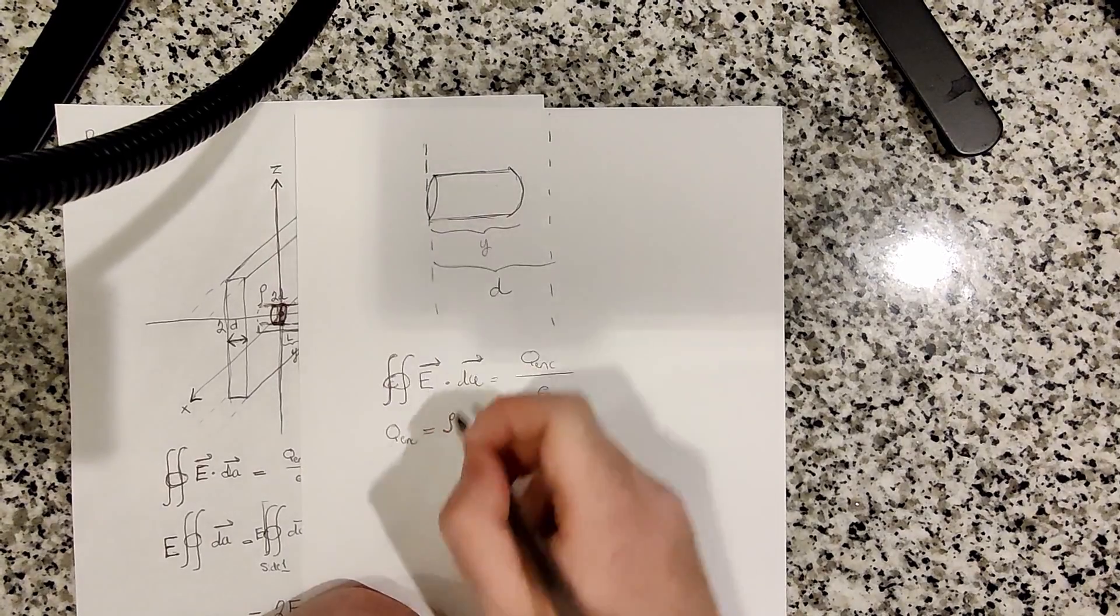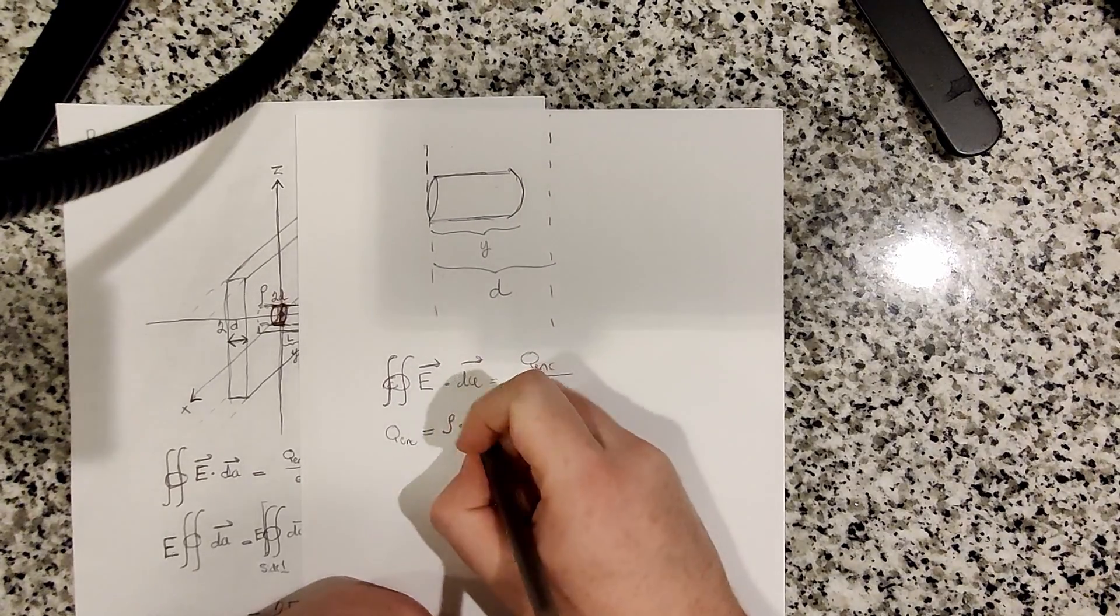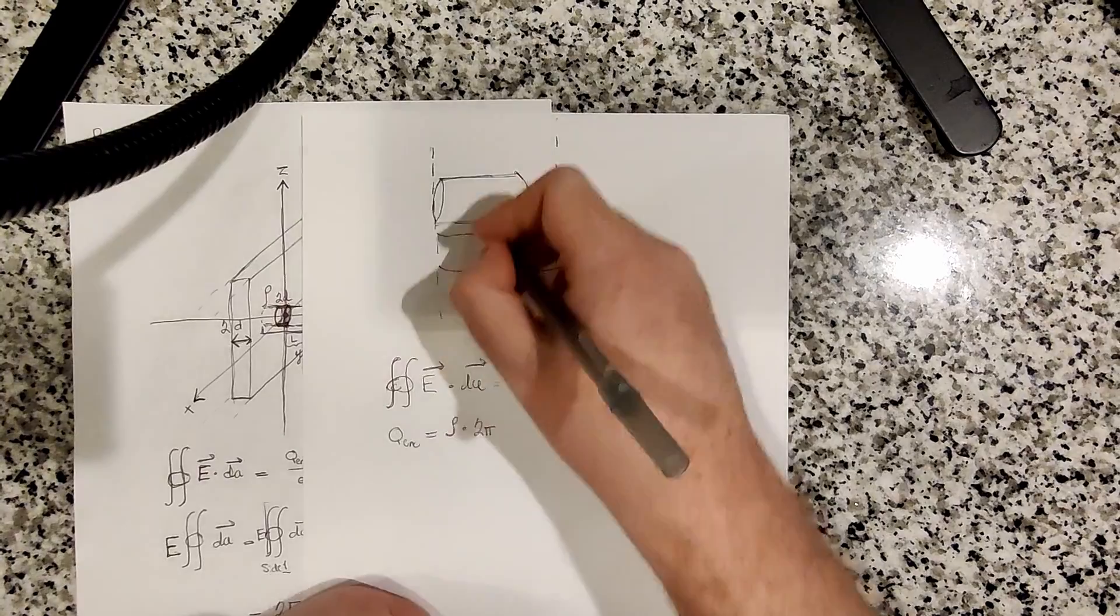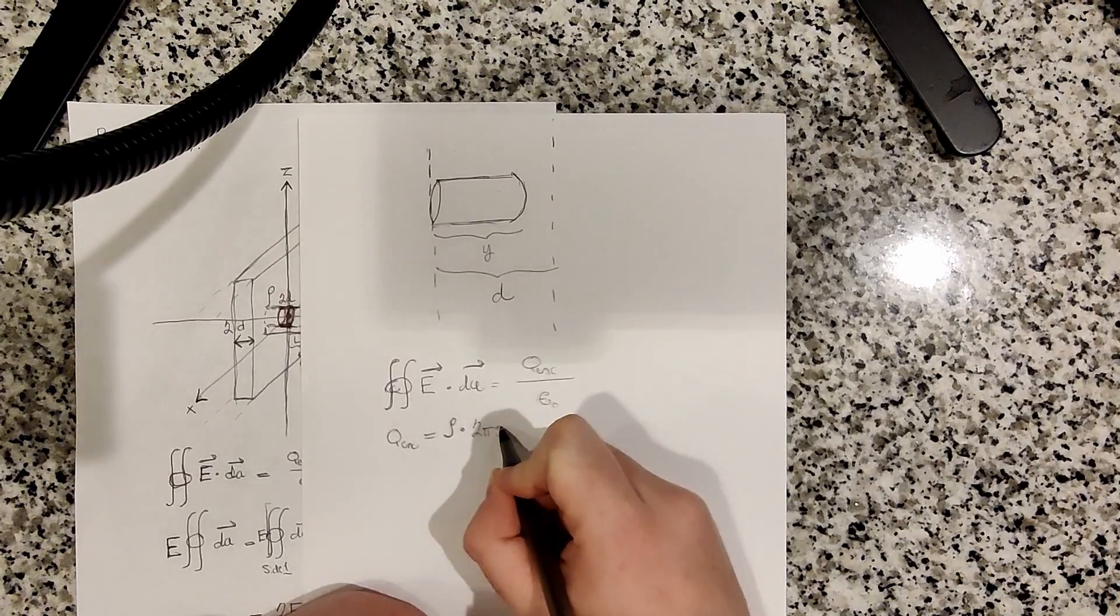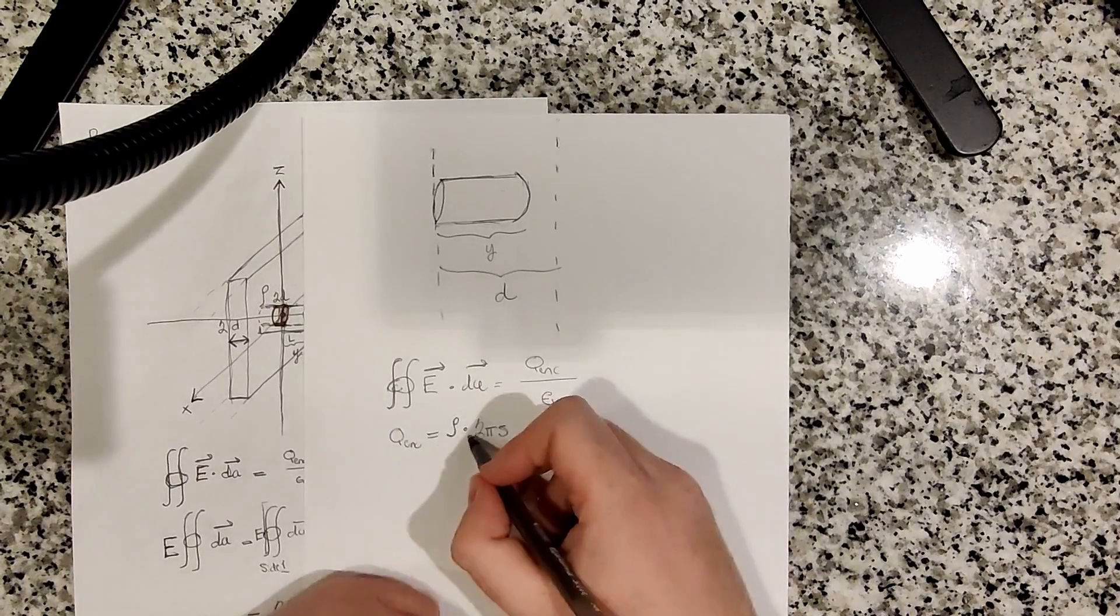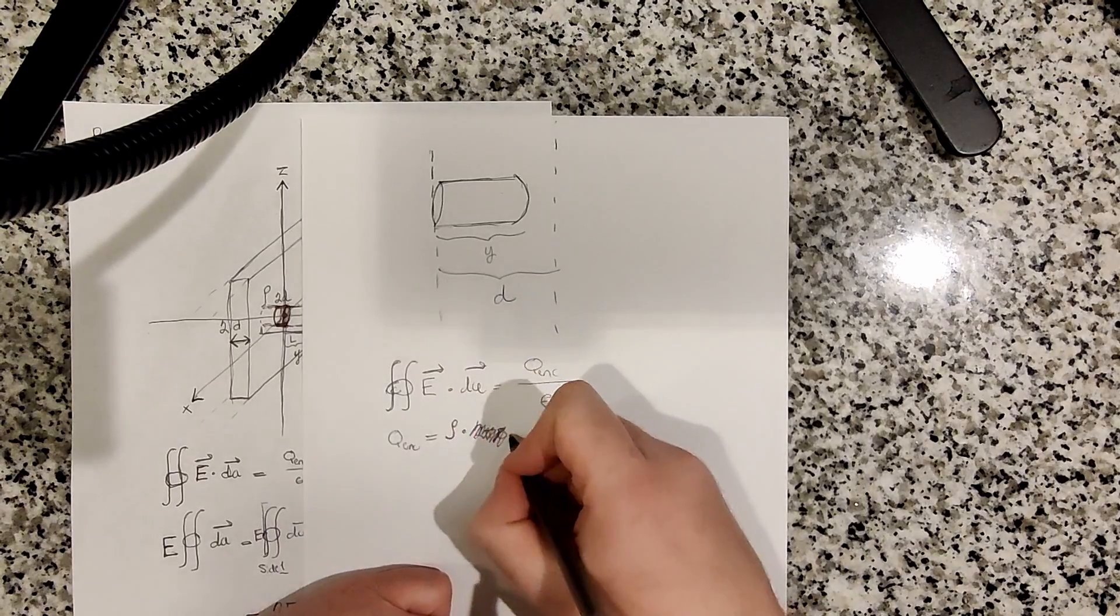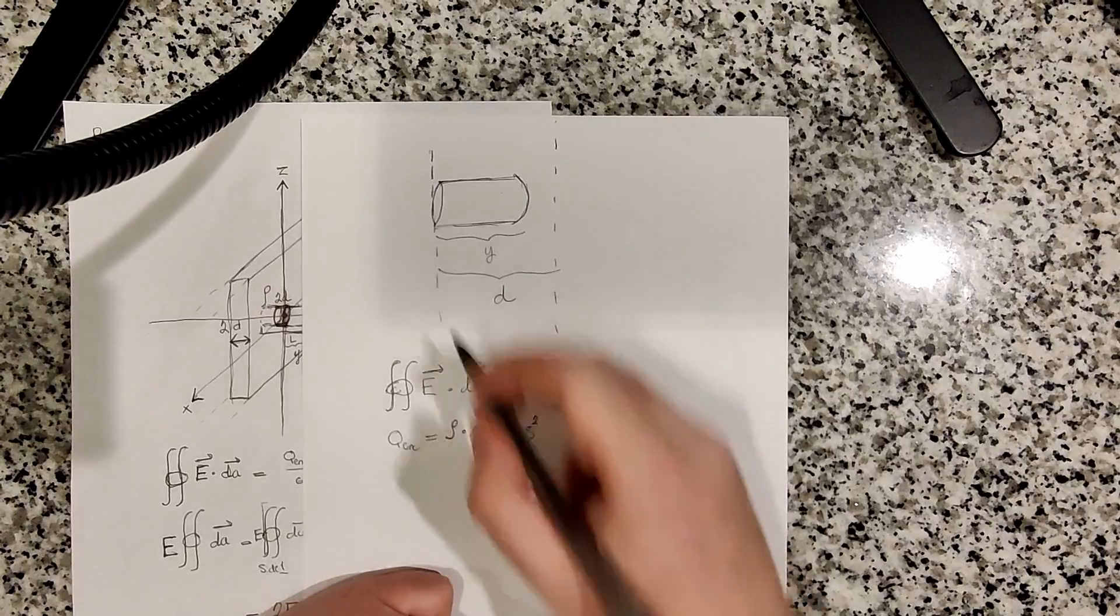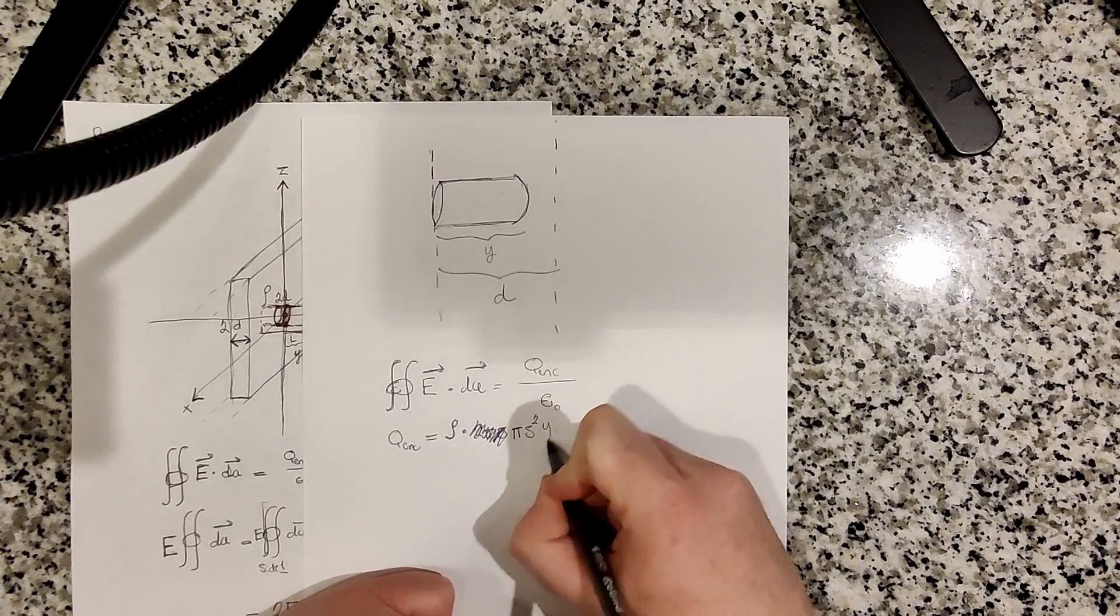We have rho, which is the volume charge density, multiplied by the volume of our Gaussian surface. Well, it's a cylindrical object. The volume would be - we want the volume, so the area of the end, which is pi s squared, where s is the radius of our cylinder. We multiply that by the length y.